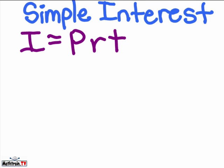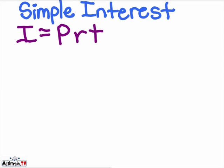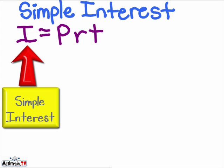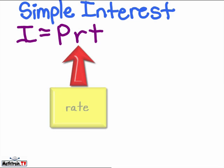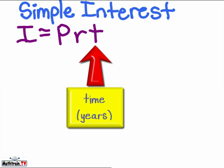The principal is the amount of money deposited or borrowed. I equals PRT. I is simple interest. P is principal. R is rate. And T is time, which is measured in years.